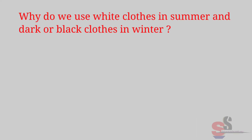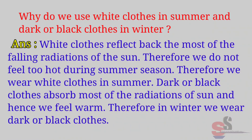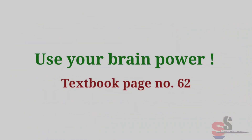Use Your Brain Power, textbook page 61: Why do we use white clothes in summer and dark or black clothes in winter? Answer: White clothes reflect most of the falling radiations of the sun, therefore we do not feel too hot during summer. Dark or black clothes absorb most of the radiations of the sun and hence we feel warm, therefore in winter we wear dark or black clothes.